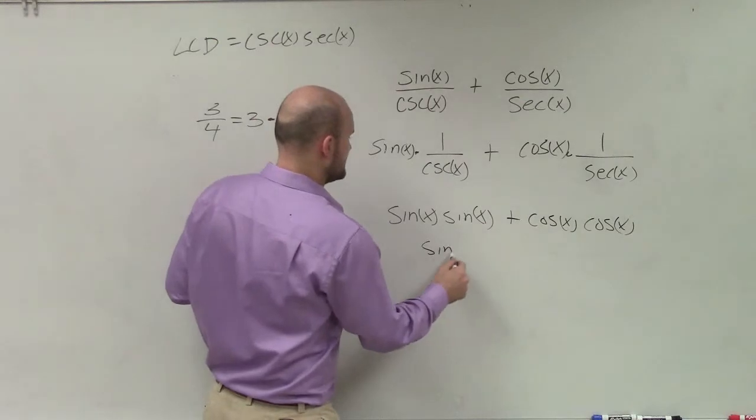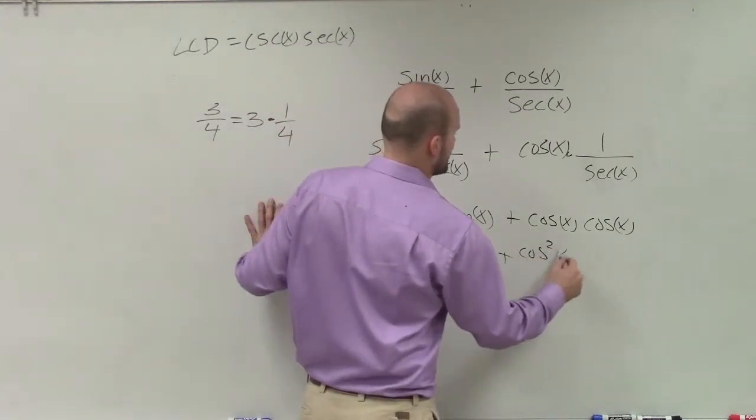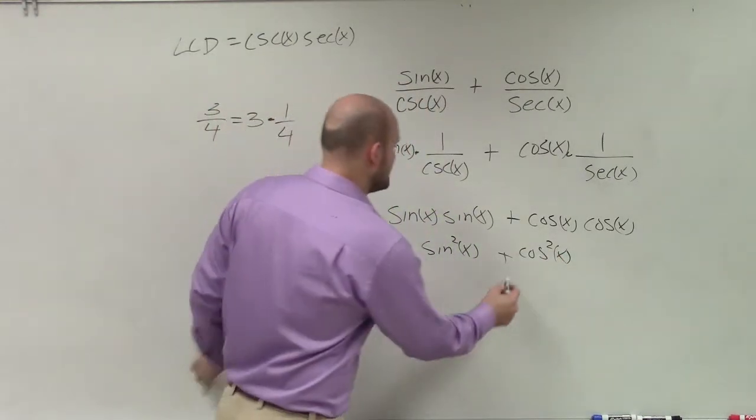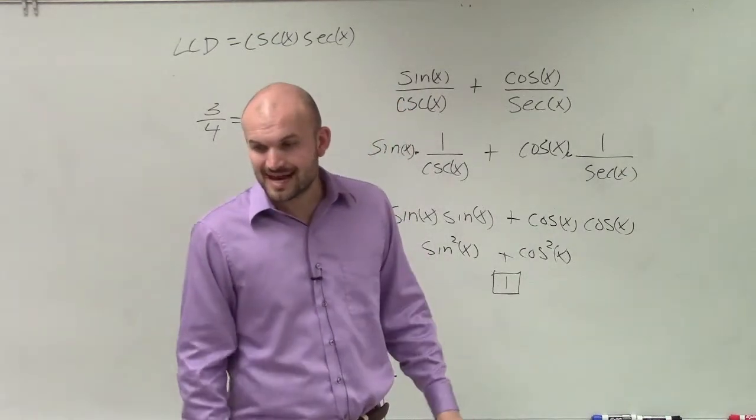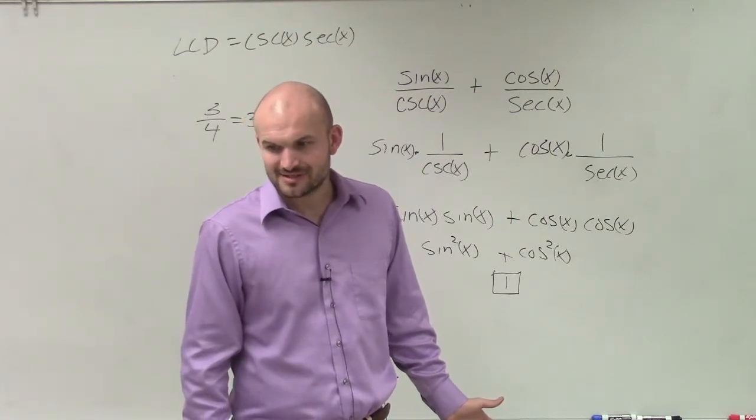Now you can see I have sine squared of x plus cosine squared of x. By using my Pythagorean identities, I know that sine squared plus cosine squared equals 1. So therefore, ladies and gentlemen, that is how you simplify this trigonometric equation.